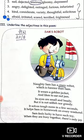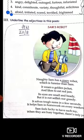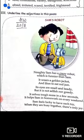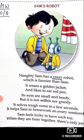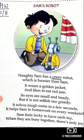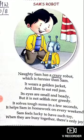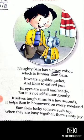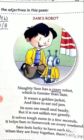Let us now see exercise 3. You have to underline the adjectives in this poem. Naughty Sam has a crazy robot which is funnier than Sam. It wears a golden jacket and likes to eat red jam. Its eyes are small and beady.